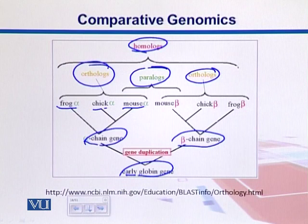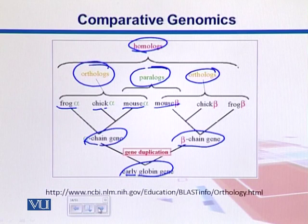If we look at genes that are similar but have diverged through gene duplication and are found within the same organism — for example, in mouse we have alpha globin and beta globin — those are classified as paralogues.